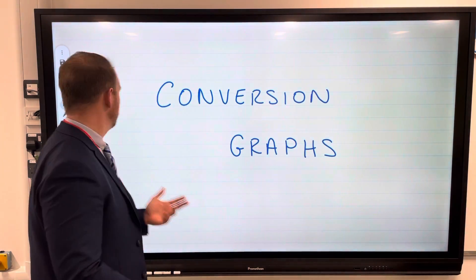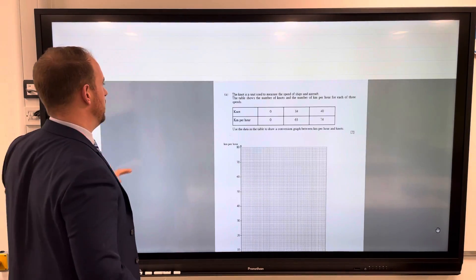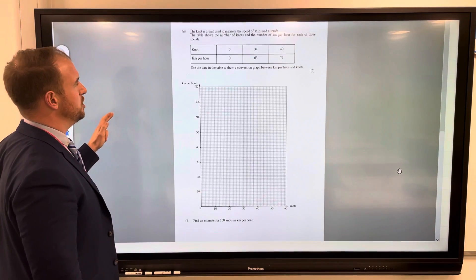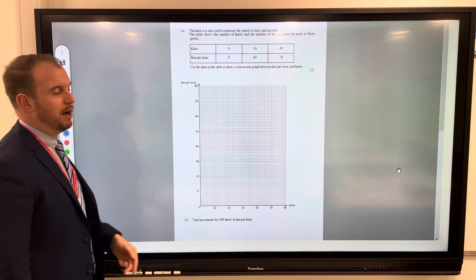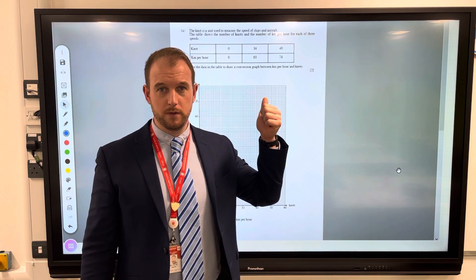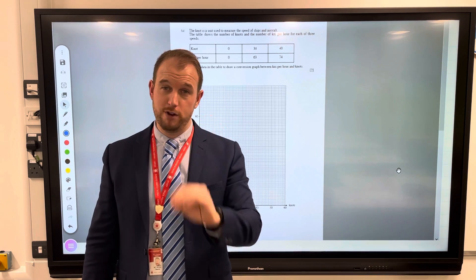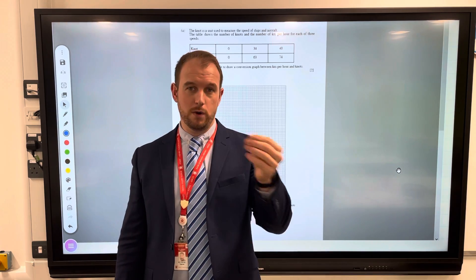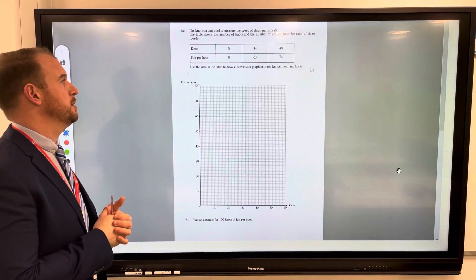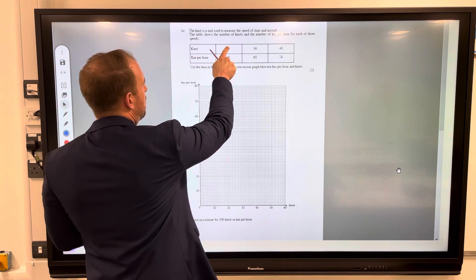Either way, nice easy marks really. So let's have a standard question. The knot is a unit used to measure the speed of ships and aircraft. Before we go any further, you don't need to be a genius about what the information is on here. Please do not let that put you off. It's just a graph and these are the numbers going on to the graph. The table shows the number of knots and the number of kilometers per hour for each of the three speeds.